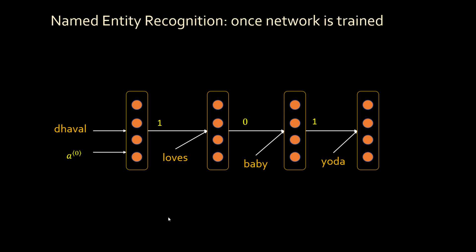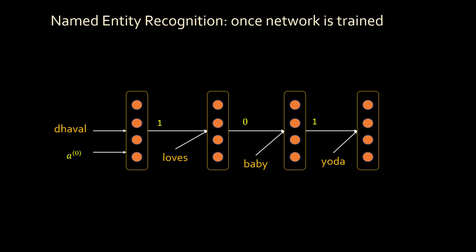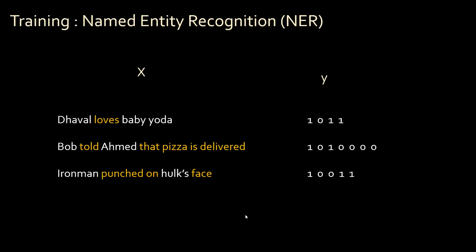Once the network is trained, it will output: 'the world' is 1, 'loves' is 0, 'baby' is 1, and so on — giving you your NER output. Another way to represent the same network — to avoid confusion — is where each input word comes from the bottom with an activation. These two diagrams are exactly the same. The generic representation of RNN is one layer where you are in a loop, supplying the output of the previous word as input to the next word.